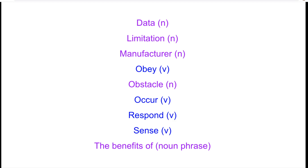So before we do the reading, here are the vocab words for this reading. We're on page 56 right now. I have colour coded them — there are no adjectives this time. So we have: data, limitation, manufacturer, obey, obstacle, occur, respond, sense, and the benefits of — so a little noun phrase there.